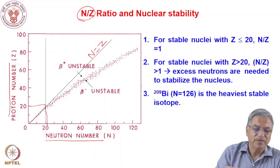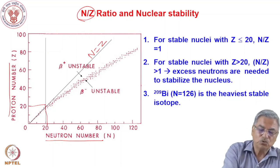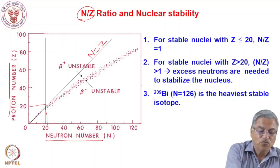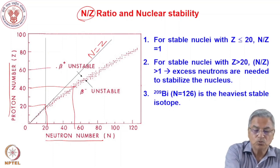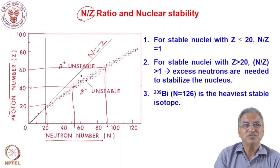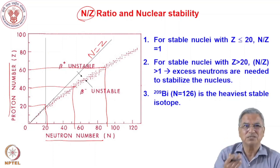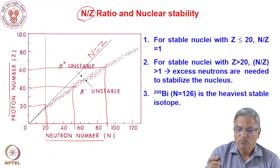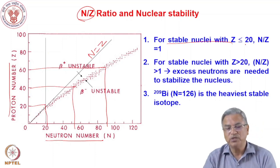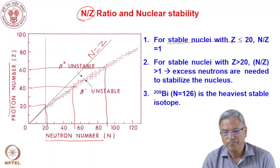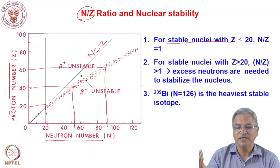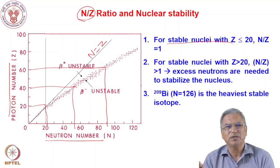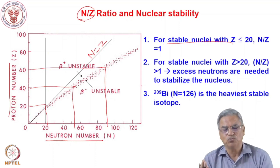The moment we go beyond calcium, more than proton number 20, you require more neutrons to stabilize the nucleus. For 40 protons, you require close to 50 neutrons. For 60 protons, you require close to 90 neutrons. As you increase the number of protons, the number of neutrons needed to stabilize the nucleus increases further. For stable nuclei with Z less than or equal to 20, the neutron-to-proton ratio is equal to 1, but for stable nuclei with Z more than 20, they have certain excess neutrons.